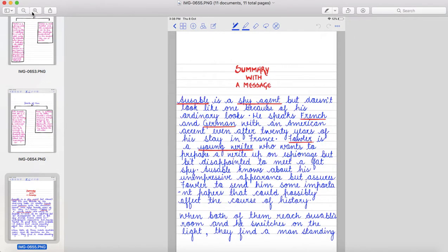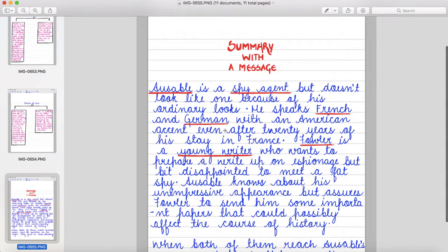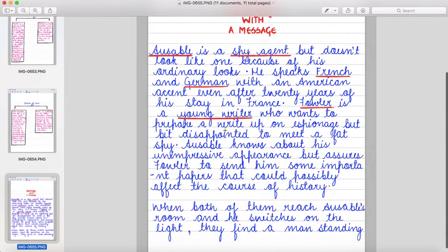Okay? Max is gullible as he takes Ausable's words seriously without verifying the truth of his opponent's claim about the balcony outside the window. Okay? Now, let's discuss the summary with a message. Ausable is a spy agent but doesn't look like one because of his ordinary looks. He speaks French and German with an American accent even after 20 years of his stay in France.